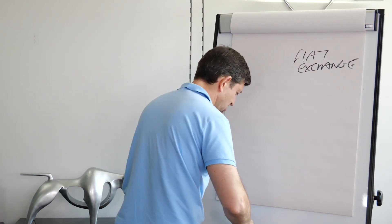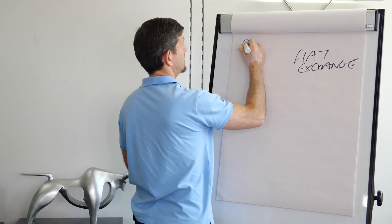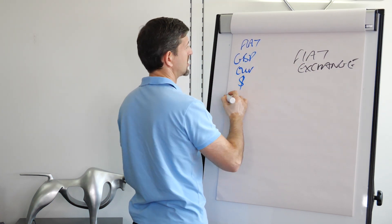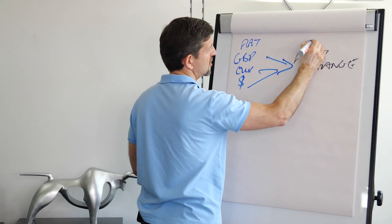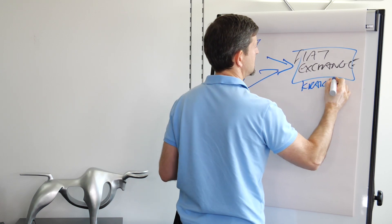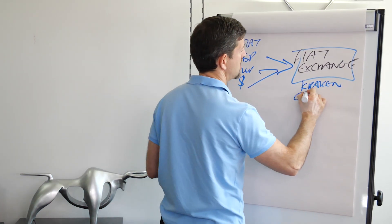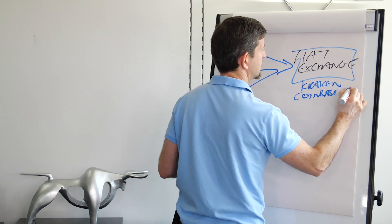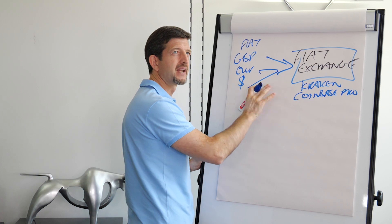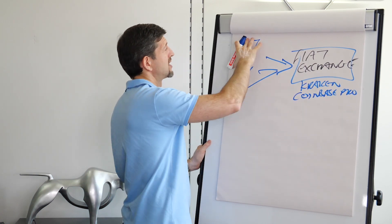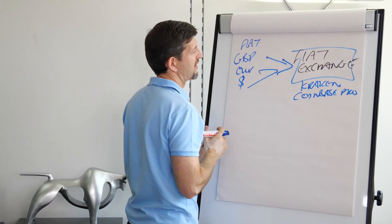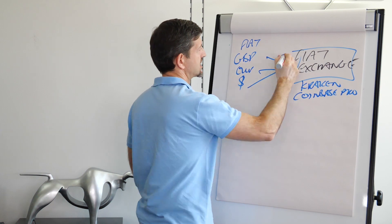First, you need to send your fiat money - your Great Britain pound or euros or dollars or whatever - to a fiat exchange. For example, Kraken could be one, Coinbase Pro could be another, and I think Binance you can do that now in some cases. Things are developing all the time where you can basically transfer from your bank account to a fiat exchange. That is step number one.